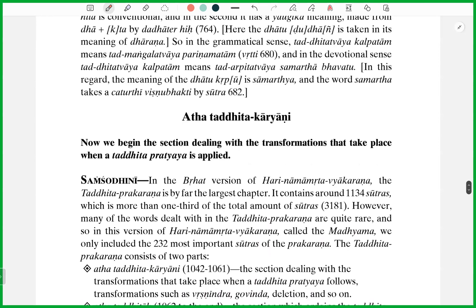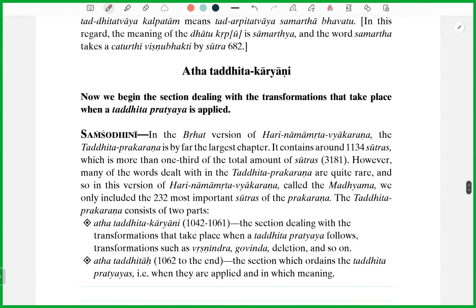Now we begin the section dealing with the transformations that take place when the Taddhita Pratyas is applied. In the Brihat version of Harinama Amrita Vyakaranam, the Taddhita Prakarna is by far the largest chapter. It contains around 1134 Sutras, which is more than one third of the total 3181 Sutras. In Brihat, we have that many total Sutras, and out of them, 1134 are in the Taddhita itself.